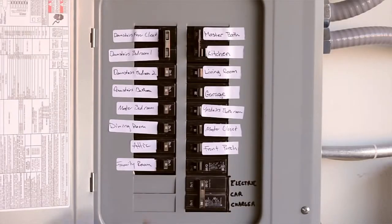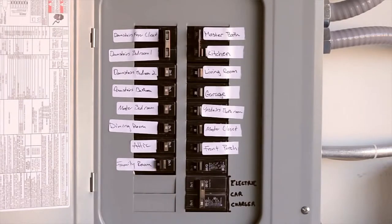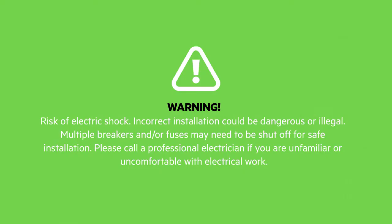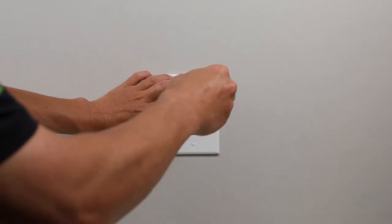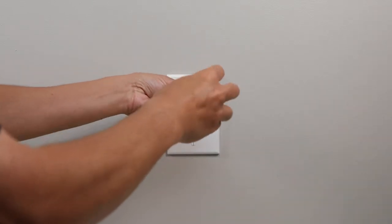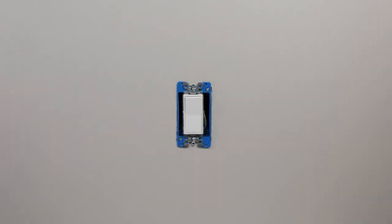To begin, shut off the power to the appropriate circuit breaker or breakers. Remove the existing faceplate from your current switch and use a voltage tester to check both sides of the switch, then pull it out leaving the wires.